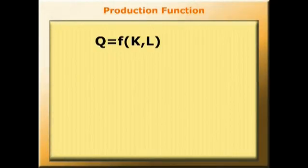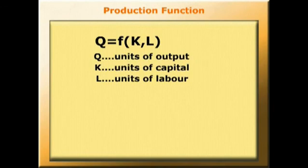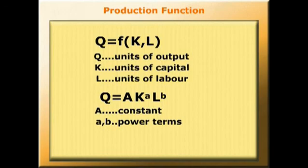A production function might have the form Q is a function of K and L, where Q is the units of output, K is the units of capital, and L is the units of labour. A power production function might take the form Q equals A times K to the a, L to the b, where A is a constant and little a and little b are power terms.